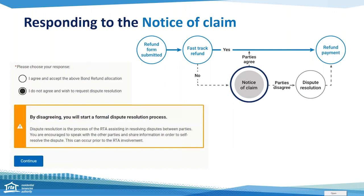To disagree using web services, customers access the notice of claim link from the RTA email notification and use web services to disagree, which simultaneously prompts the dispute resolution process — this ensures the bond continues to be held at the RTA. The RTA still accepts dispute requests by post and signed notices of claims, which must be received within the legislative timeframe. If everyone agrees on the notice of claim, they respond using the email link through to RTA web services and payment is finalised automatically. However, if new refund amounts are agreed, a bond refund paper form must be submitted by PDF or posted to the RTA within 14 days, as web services does not currently receive more than one refund for the same tenancy.